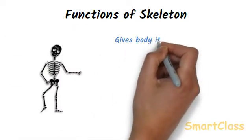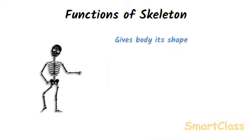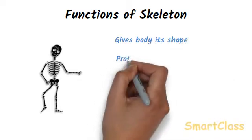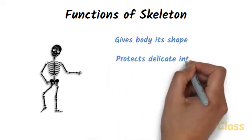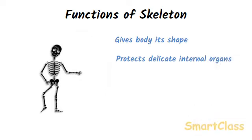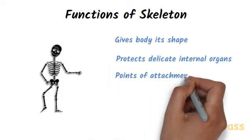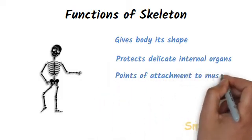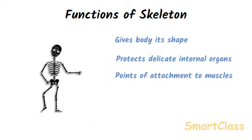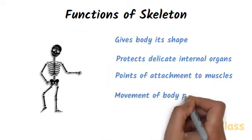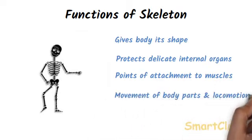The important functions of skeleton are as follows: Skeleton holds the whole body together and gives it a shape. Skeleton protects many delicate internal organs of the body such as brain, heart, liver, lungs, and spinal cord from outside damage. Skeleton provides numerous points for the attachment of muscles of the body. Along with muscles, skeleton helps in the movement of body parts and locomotion.